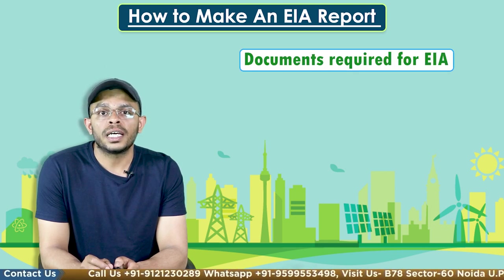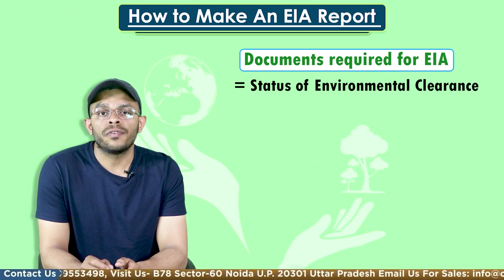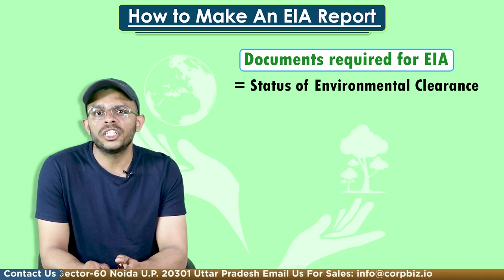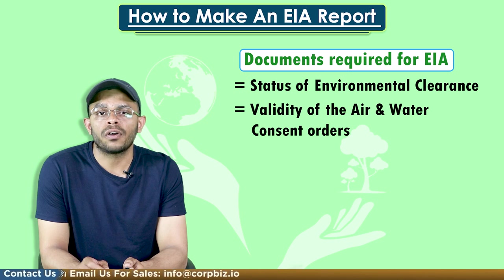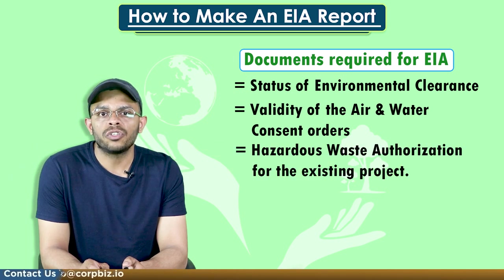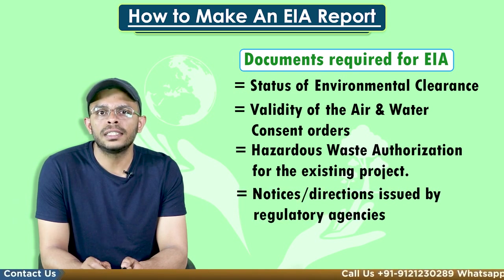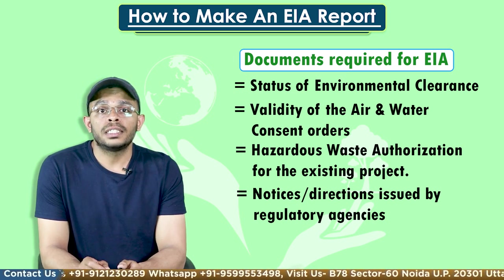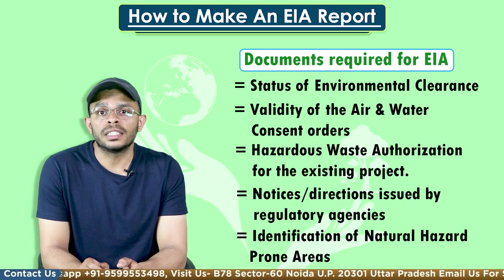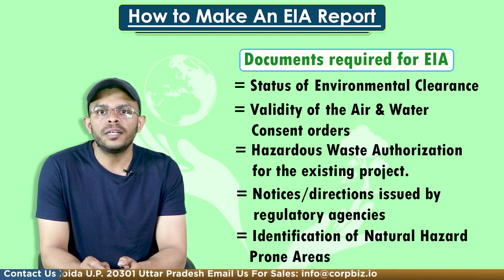Let's see the documents that are required in case an EIA is needed for a development project. First is the status of environmental clearance and compliance with the terms and conditions for the existing project. Next is the validity of the air and water consent orders. Next is hazardous waste authorization for the existing project. Next come the notices and directions issued by the regulatory agencies under Section 33A of the Water Act and Section 31A of the Air Act during the last one year. Next is the identification of natural hazard-prone areas such as earthquake-prone areas, cyclone-prone areas, flood-prone areas, and landslide-prone areas.